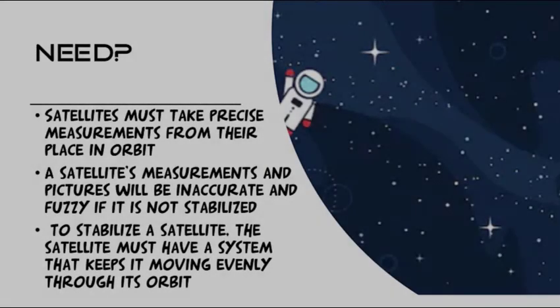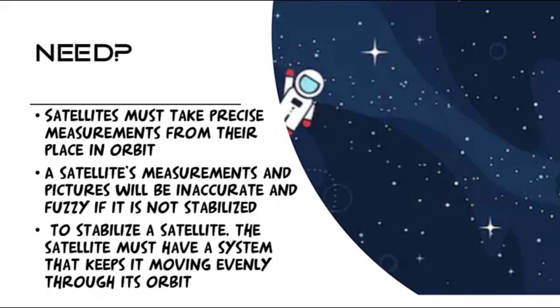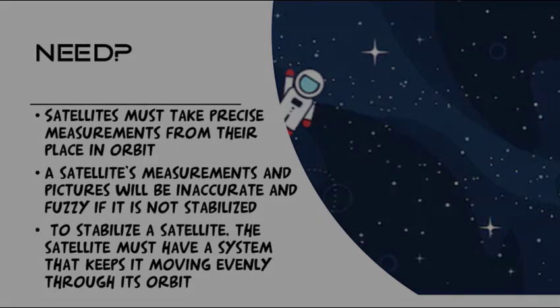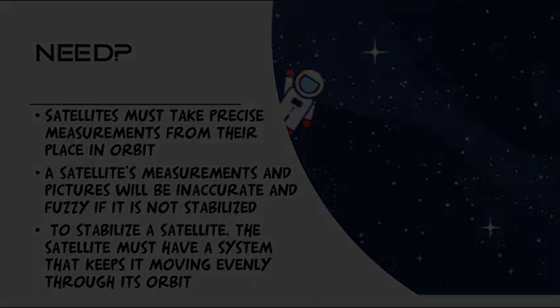So why do we need satellite stabilization? Satellites must take precise measurements from their place in orbit. A satellite's measurements and pictures will be inaccurate and fuzzy if it is not stabilized. To stabilize a satellite, the satellite must have a system that keeps it moving evenly through its orbit.